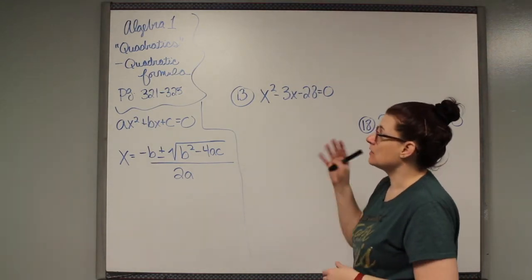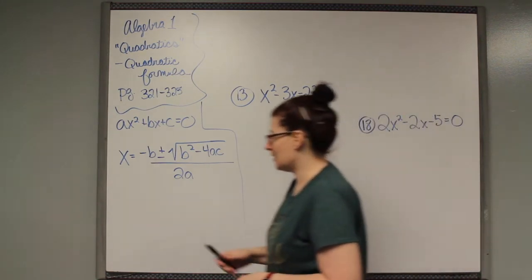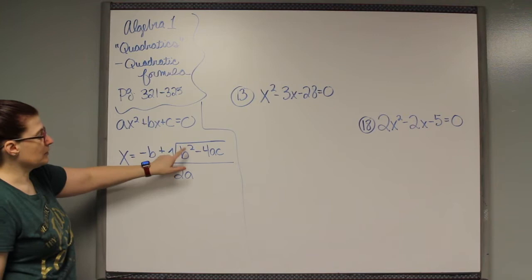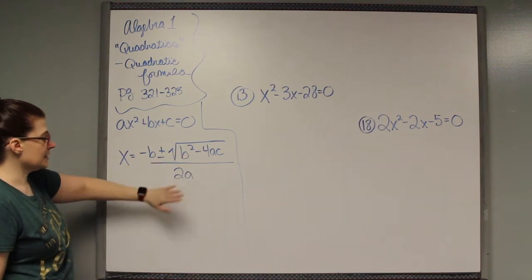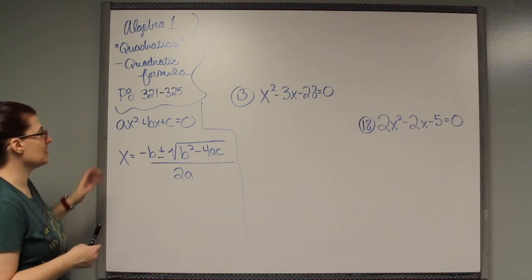So solving quadratic equations by the quadratic formula. The quadratic formula is negative b plus or minus the square root of b squared minus 4ac over 2a. Looks kind of complicated but it's basically just a substitution method.